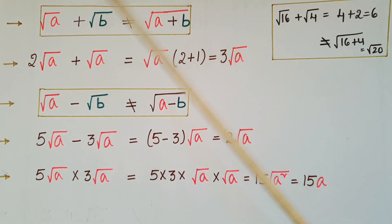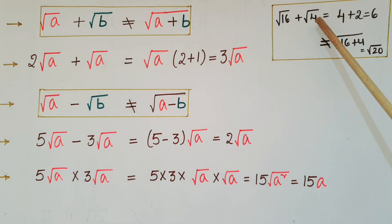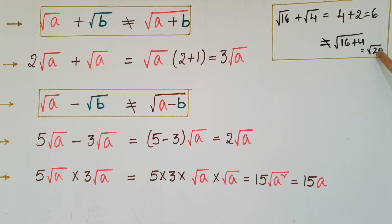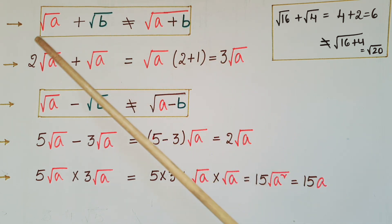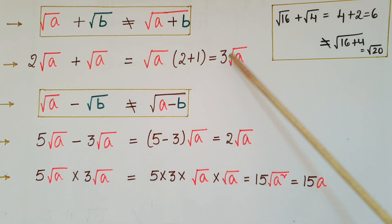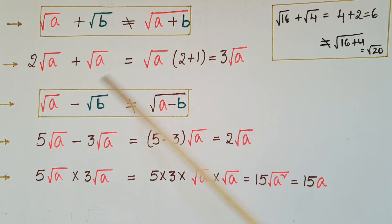Important note: we never add square roots like this — root a + root b is NOT equal to root(a + b). For example, root 16 + root 4 = 4 + 2 = 6, but root(16 + 4) = root 20, and 6 ≠ root 20. However, if root a is common in two terms, we can factor it out: 2·root a + root a = 3·root a.